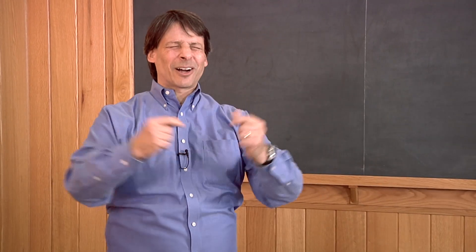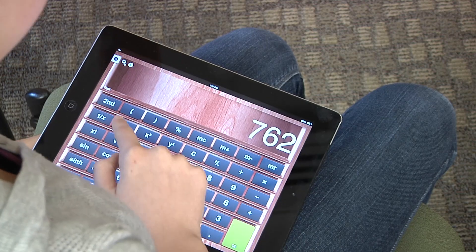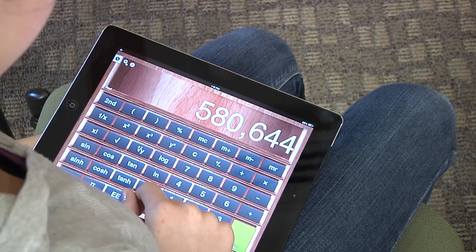One more three-digit number for the fun of it. 762. 762 squared, that's a harder one, is 580,644. Correct. Good. Would you like to know how that's done? Let me show you.